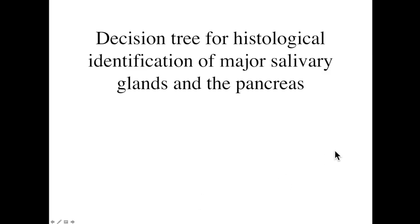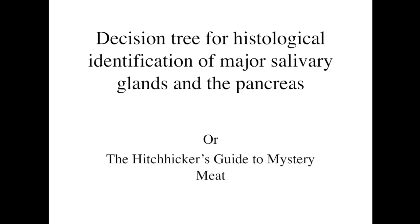This is a decision tree for the histological identification of the major salivary glands and the pancreas — the questions you should be asking yourself when you've identified a slide as either one of the major salivary glands or the pancreas, but can't tell which. Some authors have referred to a decision tree as a kind of hitchhiker's guide to mystery meat — you're given a slide and need to make a series of decisions to work out exactly what you're looking at.